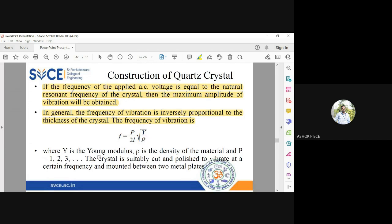Y is the Young's modulus - wherever you have stress coming into picture, you will have this Young's modulus coming. So rho is the density of the material and p is a constant.